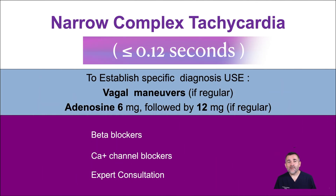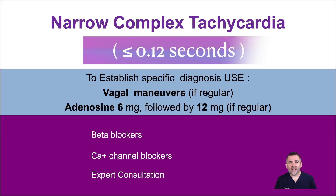The therapy for narrow complex tachycardia with a regular rhythm is to attempt vagal maneuvers. Some examples of vagal stimulation include asking the patient to bear down like making a bowel movement, blow on a syringe, or give a strong cough. Caution should be used when considering carotid sinus massage, especially in older patients. If vagal stimulation does not resolve the narrow complex tachycardia, administer adenosine.